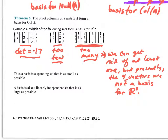To summarize: a basis is a spanning set that is as small as possible — for R3, you need exactly three vectors. And a basis is also a linearly independent set that is as large as possible. You have to cover all your bases without covering too many.